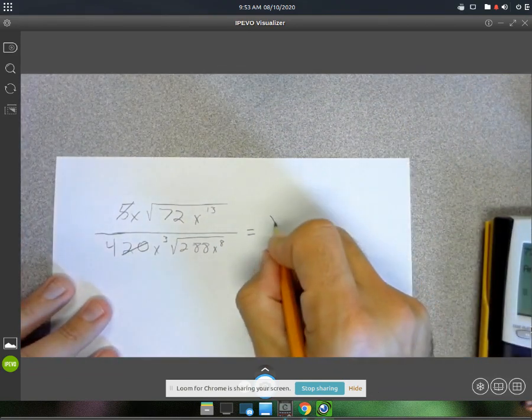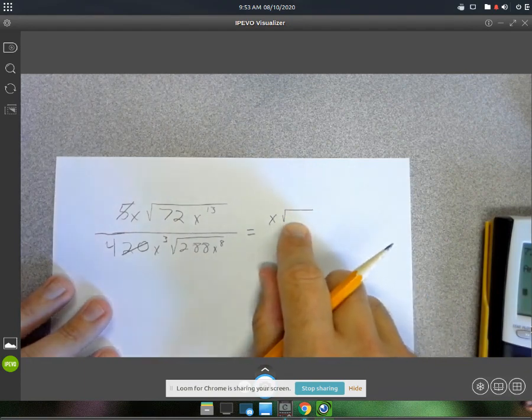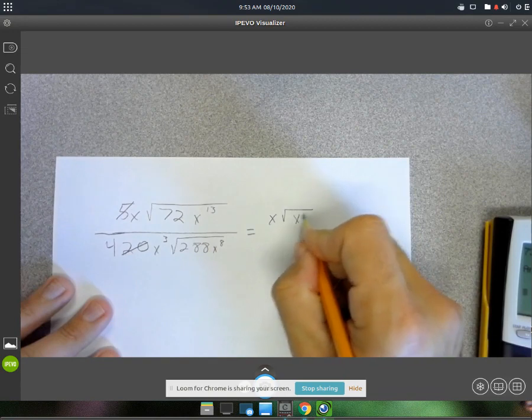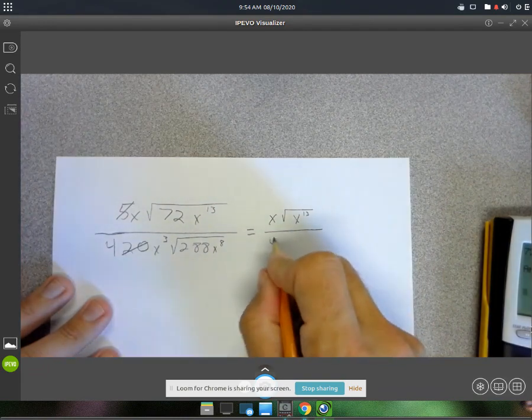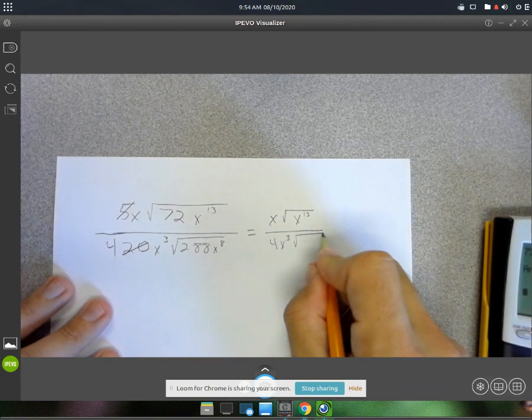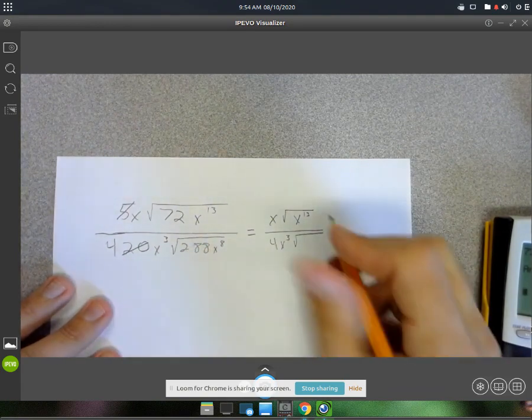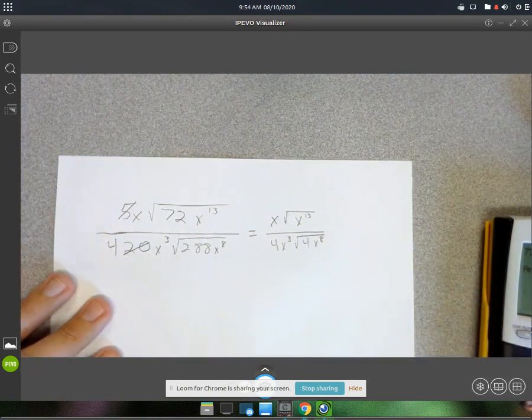So that's going to leave us with x square root. Remember there was a 1 in the numerator, so that cancels, so that just leaves us with x to the 13th. And on the bottom, we have a 4x to the 3rd, and the 288 simplified down to a 4, and then an x to the 8th.